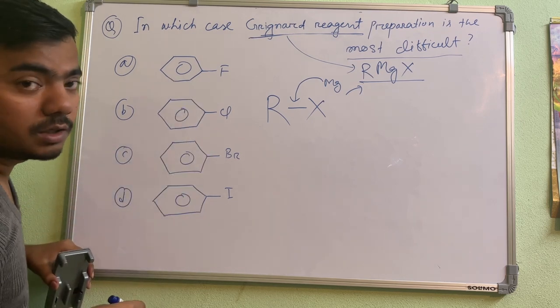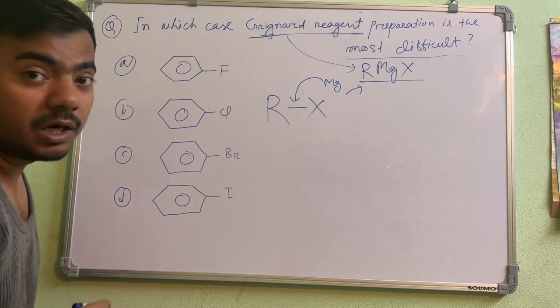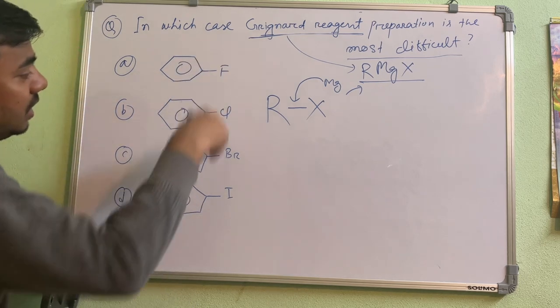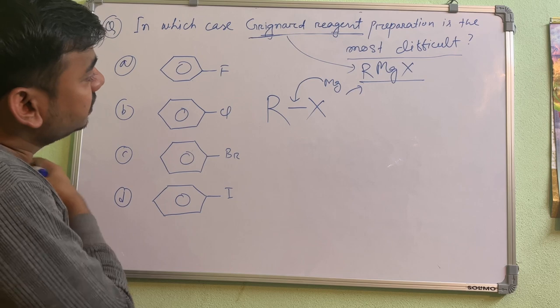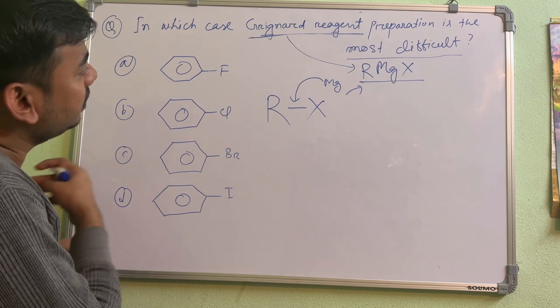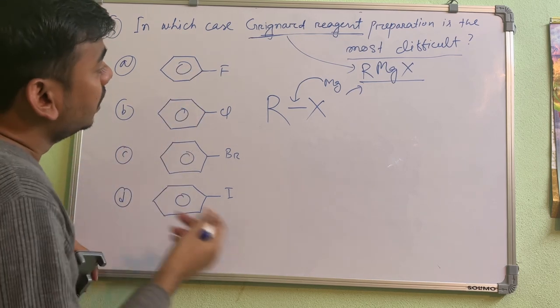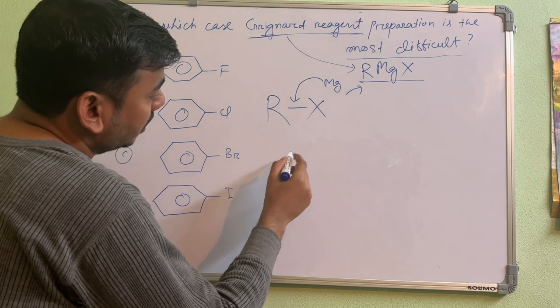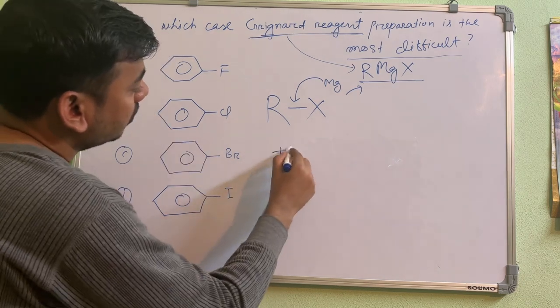First of all, you have to know one thing - that halogen is showing both minus I and plus R effect. So fluorine, chlorine, bromine, iodine - if you see the minus I or electronegativity, fluorine is the most powerful one. But you have to remember one more thing: they are going to show plus R also.